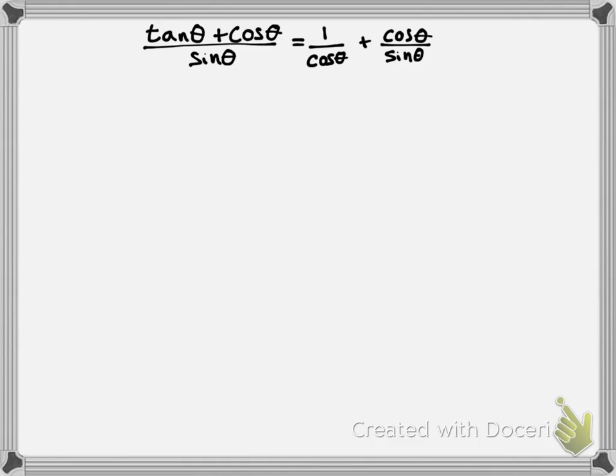First of all, we need to split this down the middle, just like I showed you guys, because nothing's allowed to cross over the equal sign. We're also not really allowed to use equal signs on any lines from here on out, because that's against the rules — we're trying to prove that the initial identity is true. So we're not allowed to use equal signs between the different sides; we're allowed to use them on each side but not between them. So we split this in half, and I'm working on the left side.